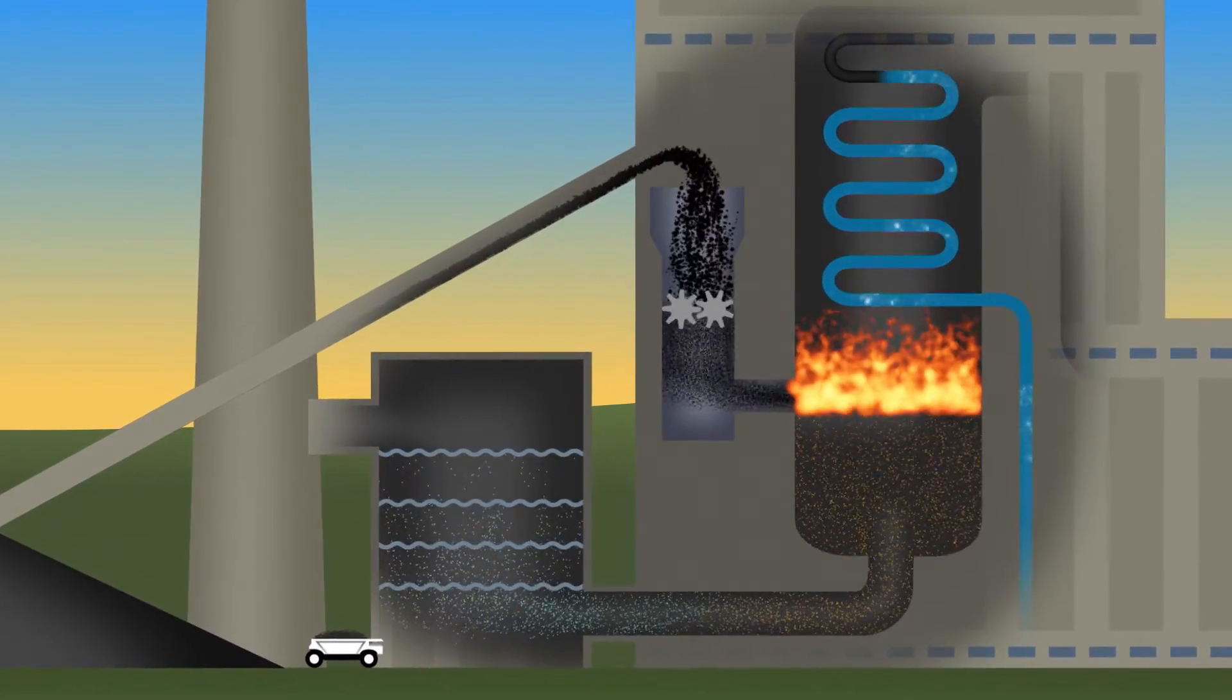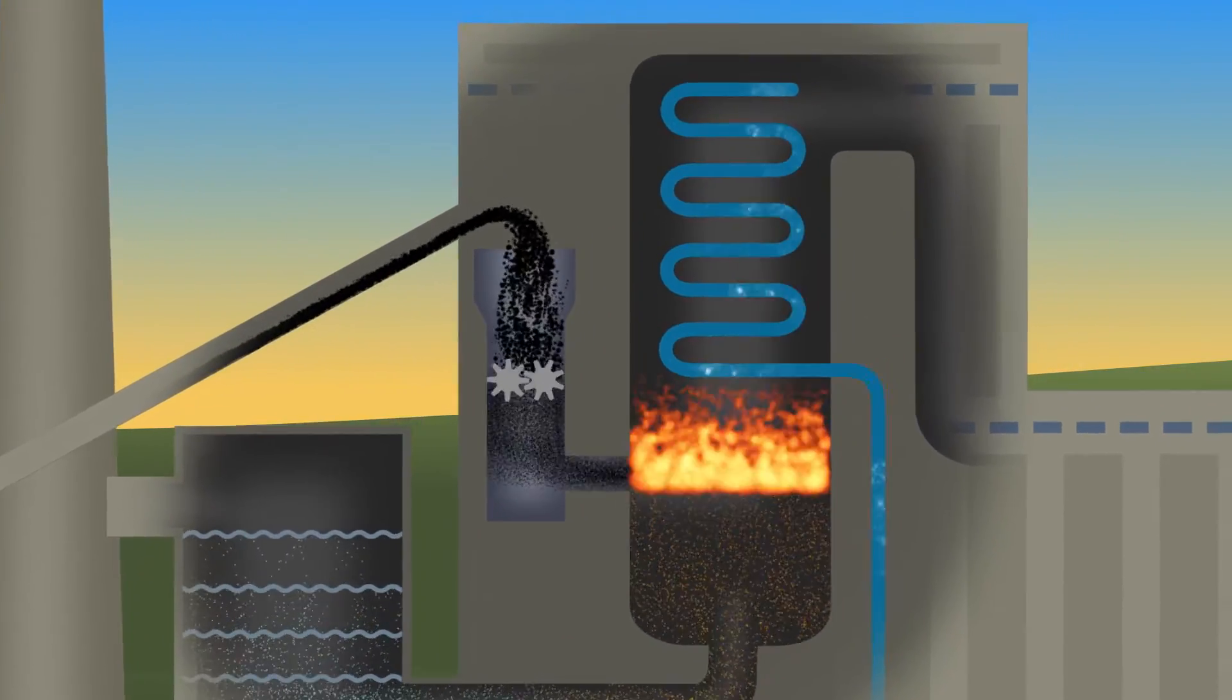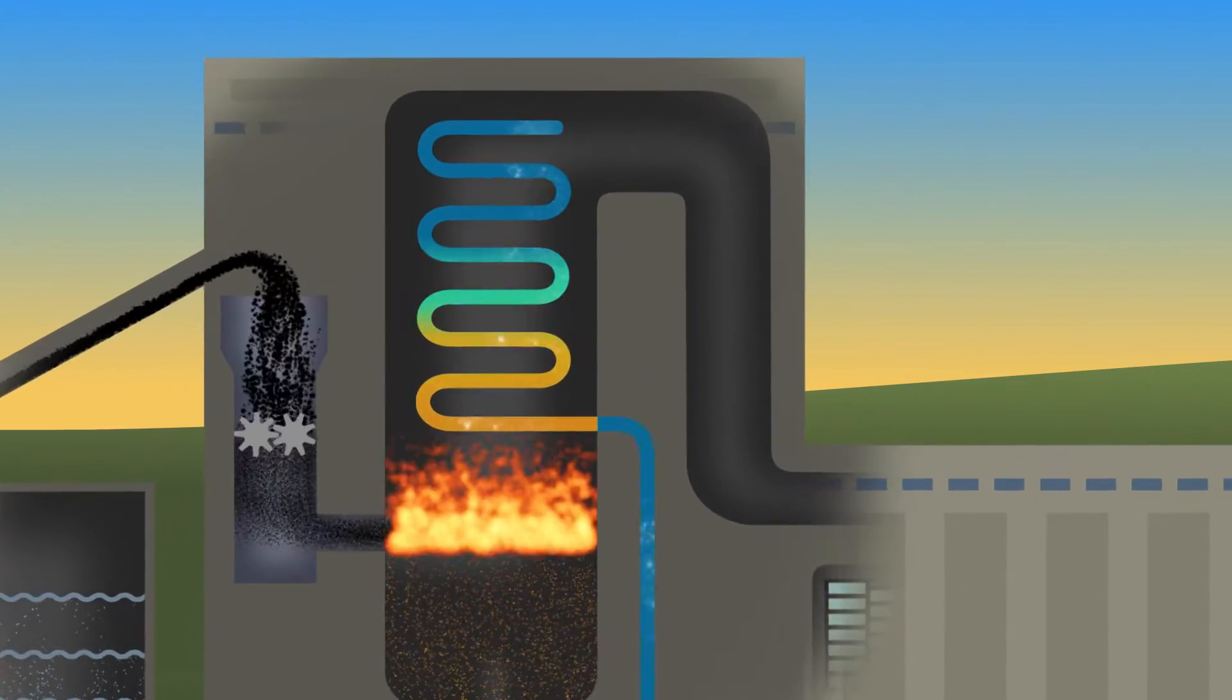Environmental controls, like scrubbers, are used to remove byproducts of combustion and protect the environment. Some byproducts are useful, such as fly ash, which is used in concrete.